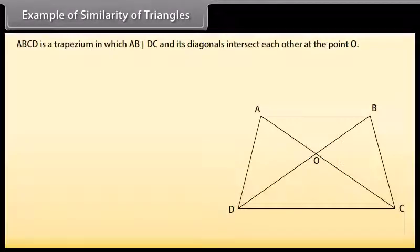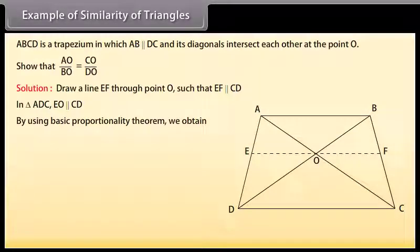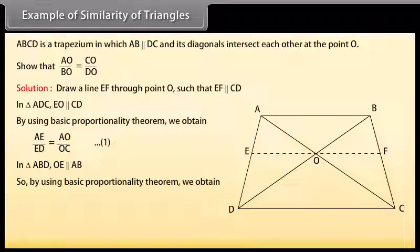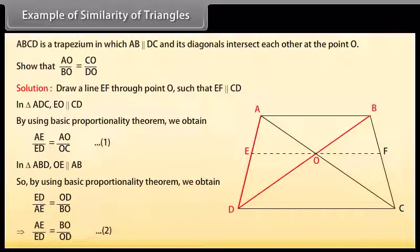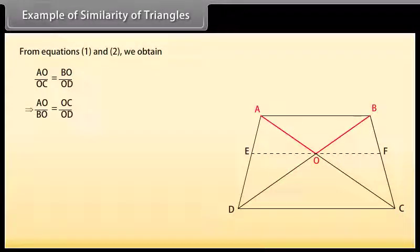ABCD is a trapezium in which AB is parallel to DC and its diagonals intersect each other at point O. Show that AO/BO = CO/DO. Draw a line EF through point O such that EF is parallel to CD. In triangle ADC, EO is parallel to CD; by the Basic Proportionality Theorem, AE/ED = AO/OC — mark it as one. In triangle ABD, OE is parallel to AB; by the Basic Proportionality Theorem, ED/AE = OD/BO, which implies AE/ED = BO/OD — mark it as two. From one and two, AO/OC = BO/OD, which implies AO/BO = OC/OD.